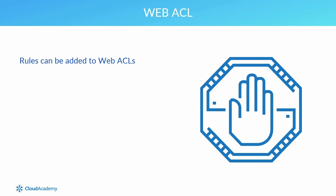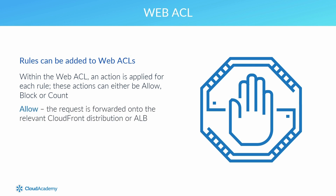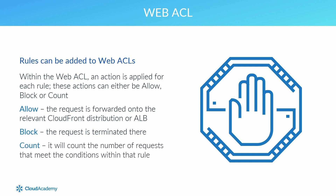Once you've created these rules, they can then be added to the Web Access Control List, or the web ACL. This forms the final component in the decision process as to whether the request traffic is blocked or allowed through to the associated CloudFront distribution or application load balancer. Within the web ACL, an action is applied to each rule, and these actions can either be allow, block, or count. When a request is allowed, it is forwarded onto the relevant CloudFront distribution or application load balancer. When a request is blocked, the request is terminated there and no further processing is taken. A count action will count the number of requests that meet the conditions within that rule — this is a good option when testing rules to ensure they are picking up requests as expected, before setting to either allow or block.